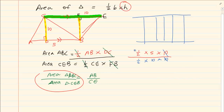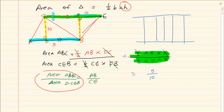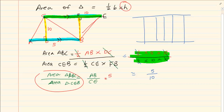Now look at what happens. If I had to reduce it, the ratio would be 5 over 10. To get the answer without doing all of this work — because I know that the heights are the same — all I had to do was look at the base of AB and the base of CE. The base of AB is 5, and the base of CE is 10, so I got the answer just by looking at the bases.